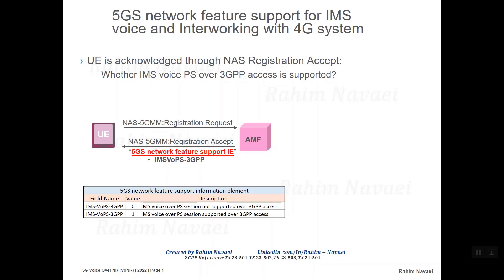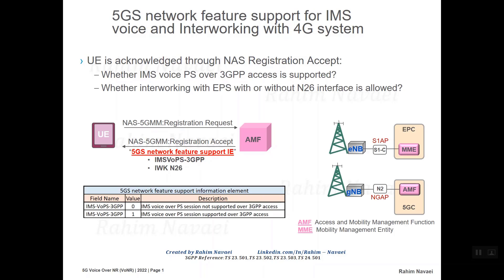There is also another element in the 5GS Network Feature Support information element called IWK-N26 (Interworking without N26 interface). The N26 interface is an interface between the AMF in the 5G core and the MME (Mobility Management Entity) in the 4G core. For this interface, GTPv2-C (GPRS Tunneling Protocol version 2 Control plane) is used to send and receive signaling messages between the MME and AMF, for instance during EPS fallback procedure.